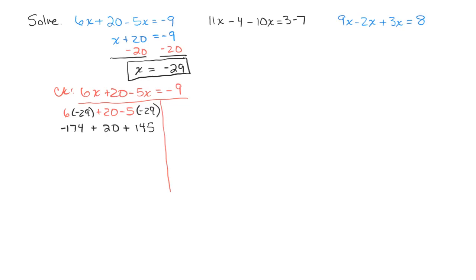So 6 times negative 29 is negative 174. And I have plus 20. And then negative 5 times negative 29 will be a plus 145. And that's the same thing as negative 174 plus 165, which is negative 9. So this means that negative 29 was the correct answer. If you're going to be official about this, more formal, we would write the solution using braces.